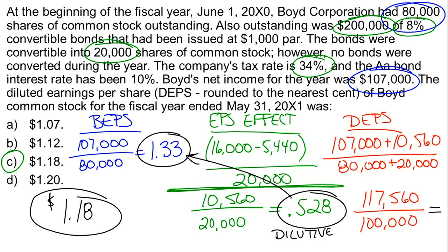The correct answer is choice C — diluted earnings per share of $1.18. Don't forget to check whether the EPS effect is lower than basic EPS. Most times it is dilutive, but they may include an anti-dilutive item. If there are two convertible items, such as a convertible bond and convertible preferred shares, one may be dilutive and one anti-dilutive — you must calculate each EPS effect and include them in the right order. The three steps were: basic EPS, EPS effect of the convertible bond, and diluted EPS — $1.18 for Boyd Corporation.